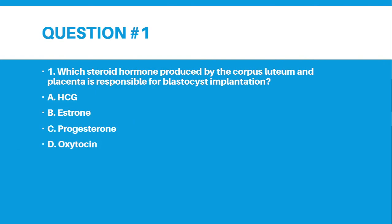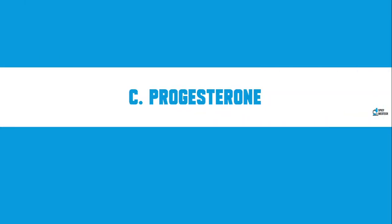Question 1. Which steroid hormone produced by the corpus luteum and placenta is responsible for blastocyst implantation? A. HCG, B. Estrone, C. Progesterone, or D. Oxytocin. The correct answer for number 1 is letter C — Progesterone.